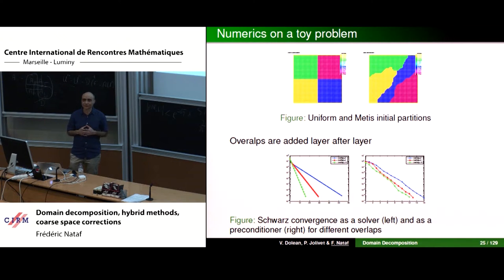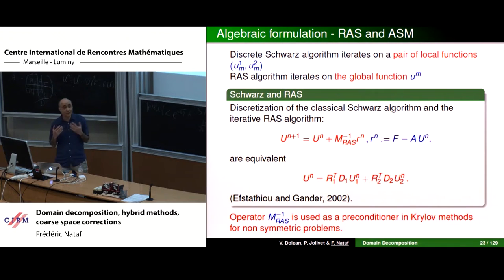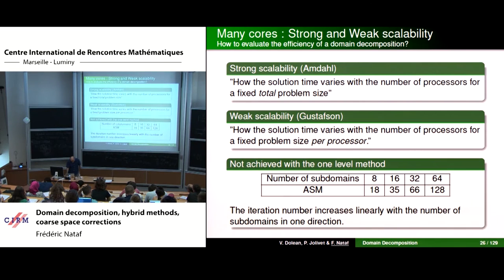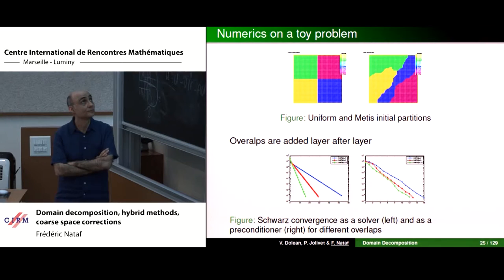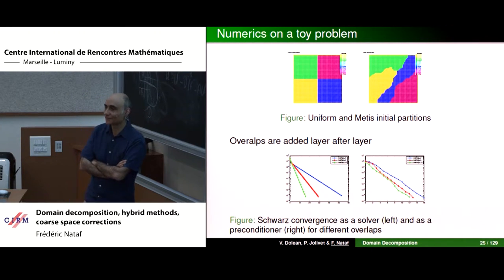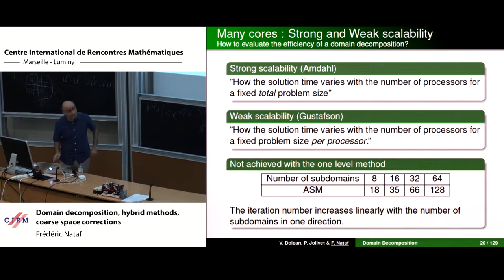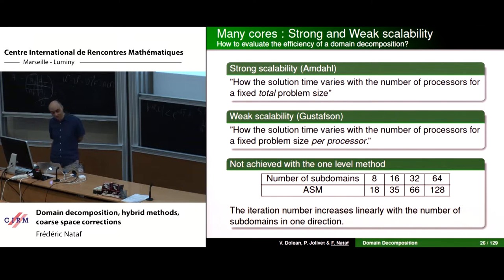With Krylov acceleration, you should always use a Krylov method rather than fixed-point iteration — the latter is useful only for conceptual design. Typically one sketches an algorithm as an iterative method, then extracts it as a preconditioner for use in a Krylov method. There are two notions of scalability: strong scalability (fixed problem size, more cores → faster solution) and weak scalability (problem size grows with number of cores, clock time stays fixed).